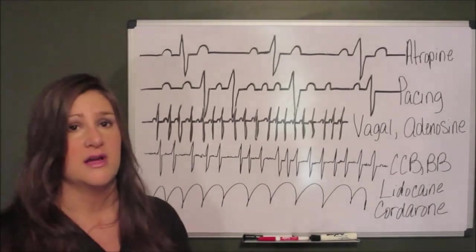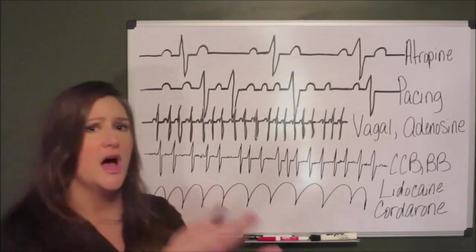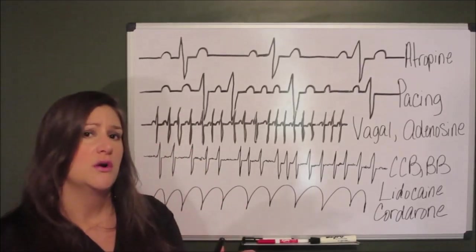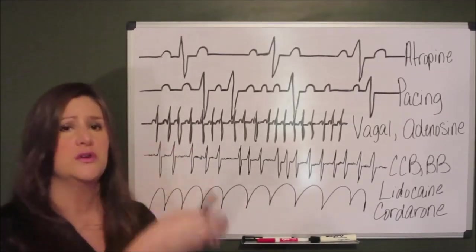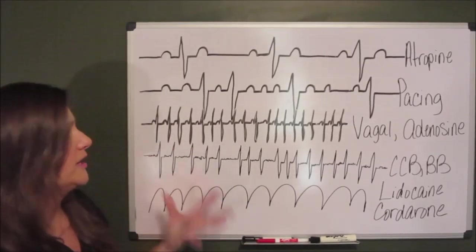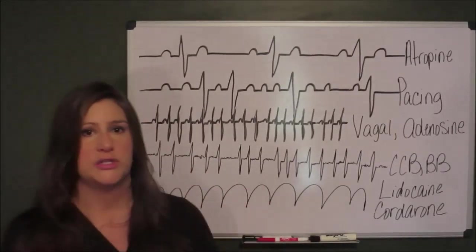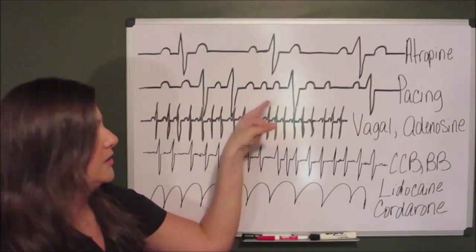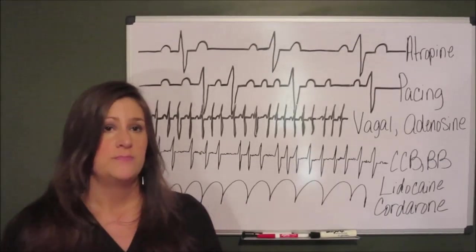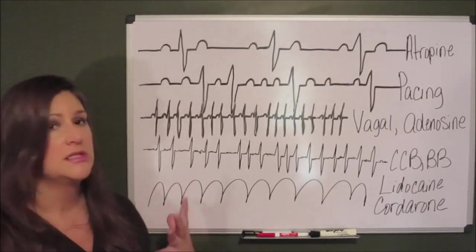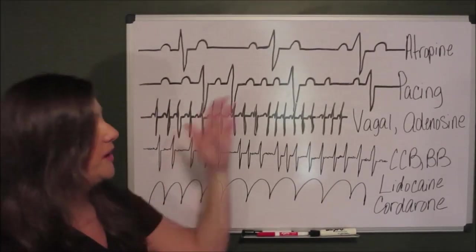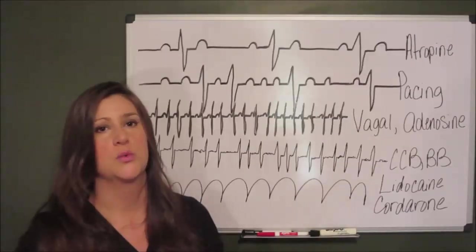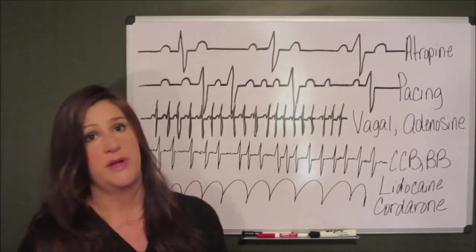All atropine does is it stops your vagus nerve from communicating with your SA node. Okay, well that's all well and good, but there is no communication between your SA node and your AV node in 3rd degree. So the only way to fix 3rd degree is to pace your patient until we can get a permanent pacer placed.